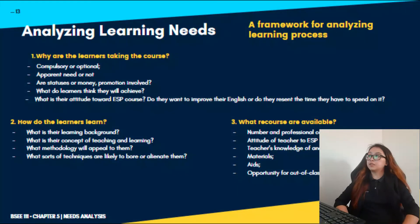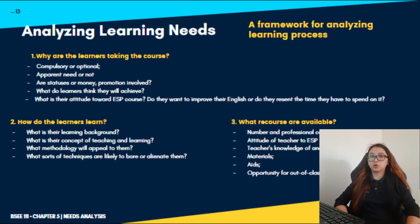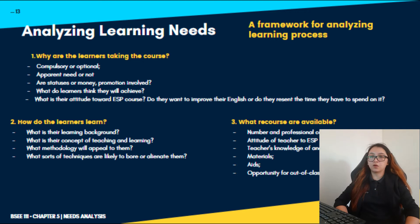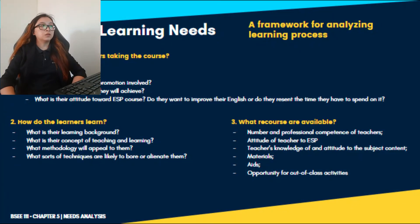The second item is: how do the learners learn? What is their learning background — for example, scores of English proficiency exams can be used to assess existing knowledge. What is their concept of teaching and learning — what are their practices, and what methodology will appeal to them? What techniques are likely to bore or alienate them? Those techniques must be eliminated and replaced with a different approach.